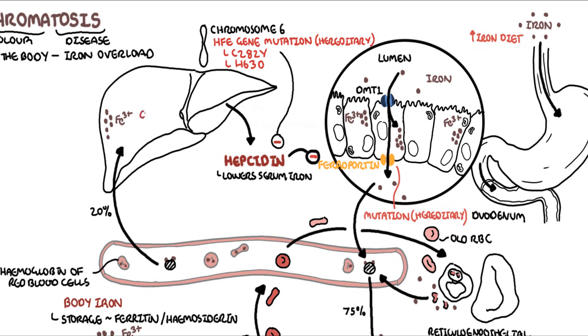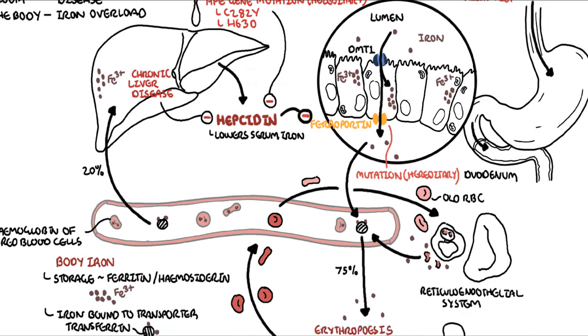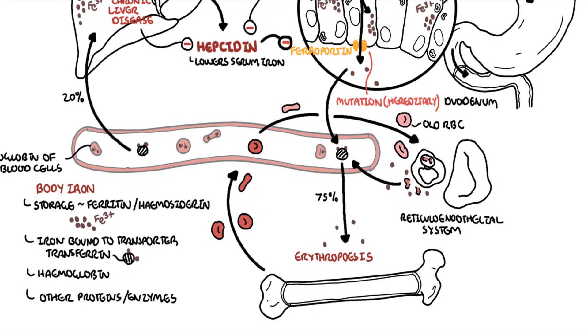Other causes of hemochromatosis include any sort of chronic liver disease, be it from alcohol or non-alcoholic fatty liver disease. These cause, for whatever reason which is incompletely understood, reduction of hepcidin, and again, reduction of hepcidin means that you cannot inhibit or stop ferroportin from working.